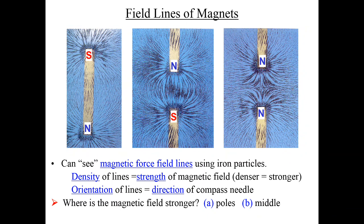We can visualize a magnetic field by sprinkling iron filings next to a magnet. Notice that where the lines are closer together, the magnetic field is stronger. So the magnetic force is strongest near the magnetic poles and weaker the further away you are. This works because iron can become magnetic, so the filings align with the magnetic field.